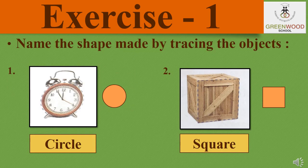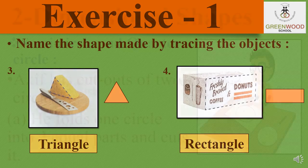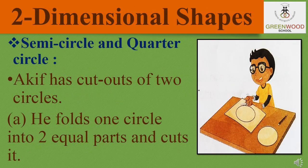Exercise 1: Name the shape made by tracing the objects. The first one is a clock — if we trace the front portion of the clock, we will get a circle. The second one is a box — if we trace its front portion, we will get a square. The third one is a piece of cheese — if we trace its front portion, we will get a triangle. The fourth one is a box — if we trace its front portion, we will get a rectangle.